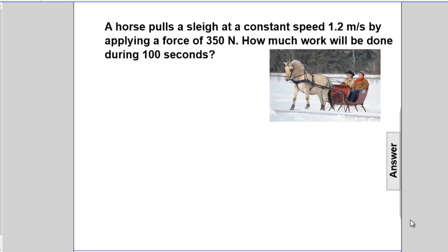Problem 7. Alright, in this problem there is a horse pulling a sleigh with a constant speed of 1.2 meters per second by an applied force of 350 newtons. The question is how much work is being done on it.